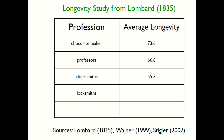Clocksmiths lived to be 55.3, so that's less attractive. Locksmiths, 47.2. I was trying to figure out why there's this discrepancy between clocksmiths and locksmiths — I don't have an answer yet. One more that is of interest to all of us is students. Unfortunately, I have some bad news: in his study, the average longevity of students was 20.2 years. I didn't want to get this event off to a depressing start, but 20.2 years is worrisome.